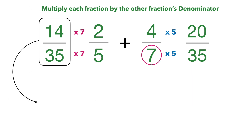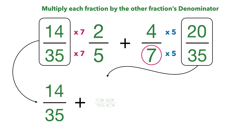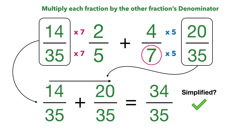So we take 14/35ths and add 20/35ths. Now we're on to step two — add the numerators across the top: 14 plus 20 is 34. Then keep the denominator the same at 35. Now for the last step: is this fully simplified? Yes, this is a fully simplified fraction. So 2 fifths plus 4 sevenths gives us a final answer of 34/35ths.